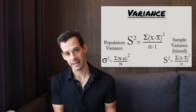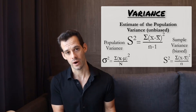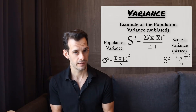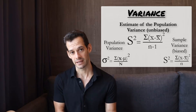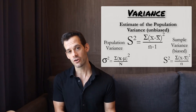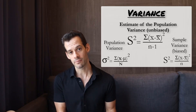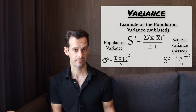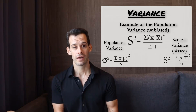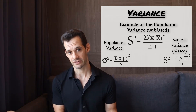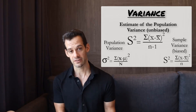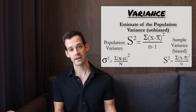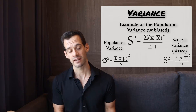What we do instead is use a slightly altered version that allows us to estimate the variance of the population using a sample. Here s² equals the sum of squared deviations from x-bar divided by n−1. Because the previous estimate was biased to be an underestimate, by dividing by n−1 — making the denominator a little bit smaller — we increase our overall estimate, hopefully bringing us closer to the actual population variance. This gives us what we call an unbiased estimate of the population variance, and this is what we most commonly use. You can also notice a difference in notation: the actual population variance uses sigma squared, while estimates from a sample use s squared.